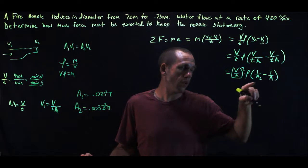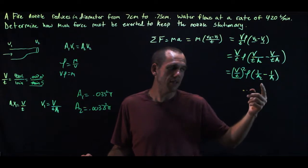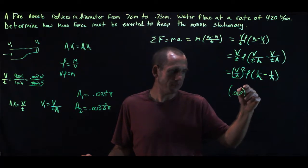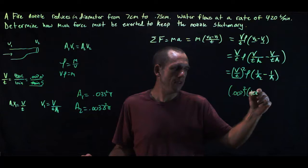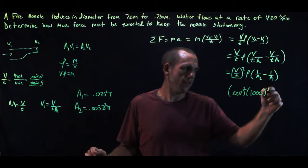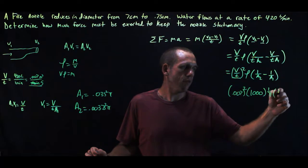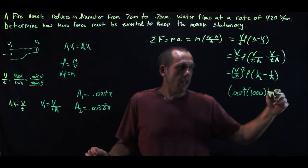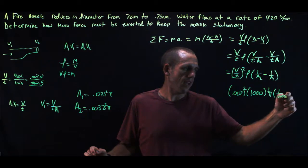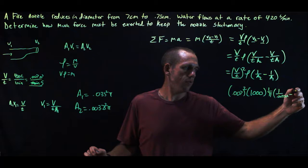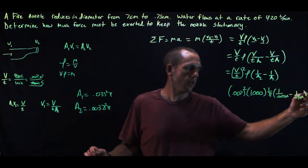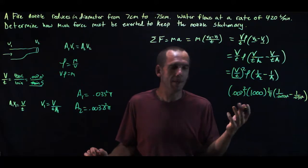And so throw all of that into this equation. We know the density of water is 1,000 kilograms per cubic meter. So I have 0.007 squared times 1,000 times, and there's pi in both of these things. So I'm going to go ahead and pull out this 1 over pi. And then I have 1 over A2, which is 0.00375 squared, minus A1, which is 1 over 0.035 squared, and do that math.